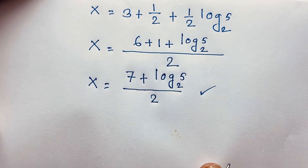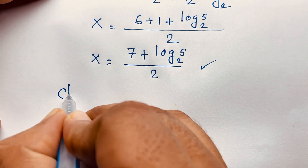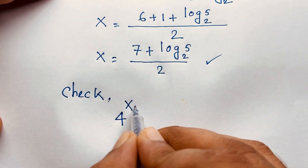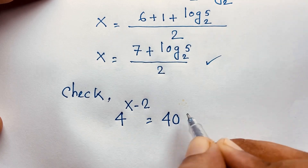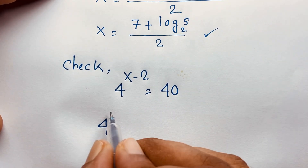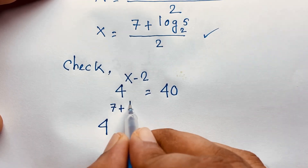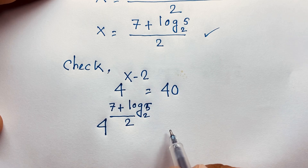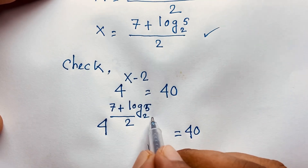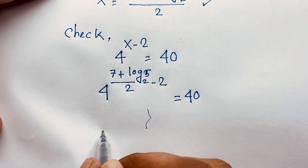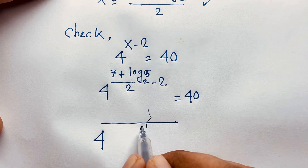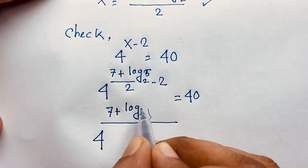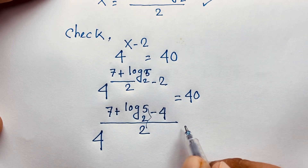Let's verify. Our original question is 4 to the power x minus 2 equal to 40. Substituting x equals 7 plus log₂5 over 2, we get 4 to the power (7 plus log₂5 over 2) minus 2. Using a common denominator of 2, the exponent becomes (7 plus log₂5 minus 4) over 2, which is (3 plus log₂5) over 2.